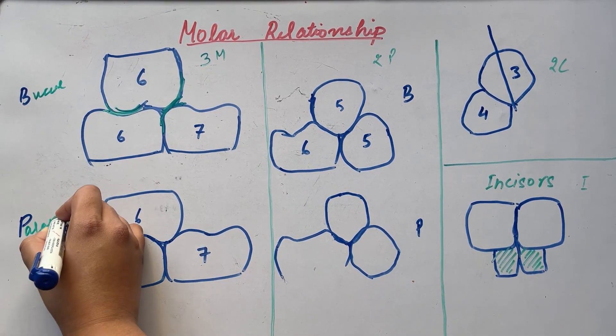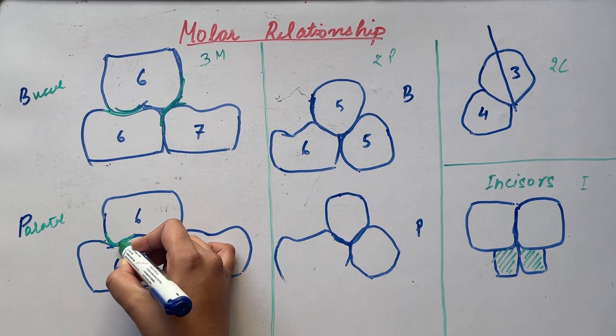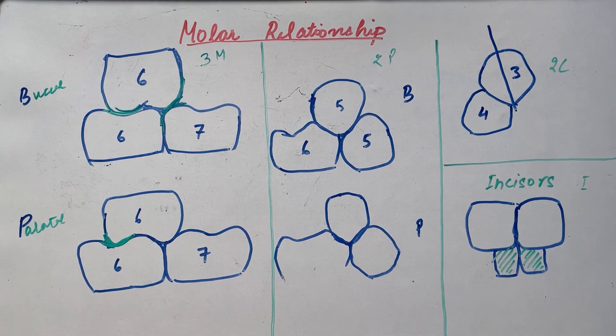The 3rd point is from palatal side. The 3rd point is, the mesiolingual cusp of the maxillary first molar occludes with the central fossa of the mandibular first molar.